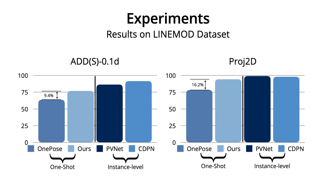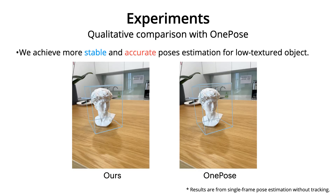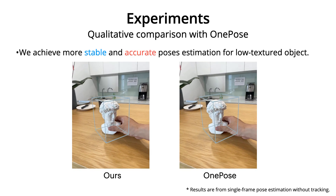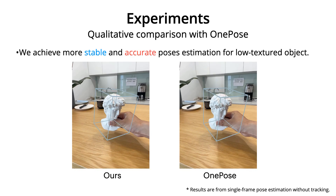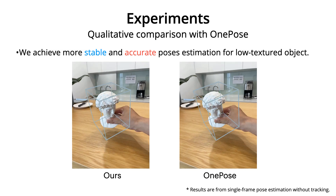We compare our method with the one-shot baseline and instance-level baselines on the LineMod dataset. Our method outperforms OnePose by a large margin. Compared with instance-level baselines which are trained to fit each object, our method has lower or comparable performance. The advantage of our method is eliminating the requirement of CAD models and per-instance pose estimator training while preserving competitive performance. The qualitative comparison with OnePose shows we achieve more stable and accurate pose estimation for low-textured objects.